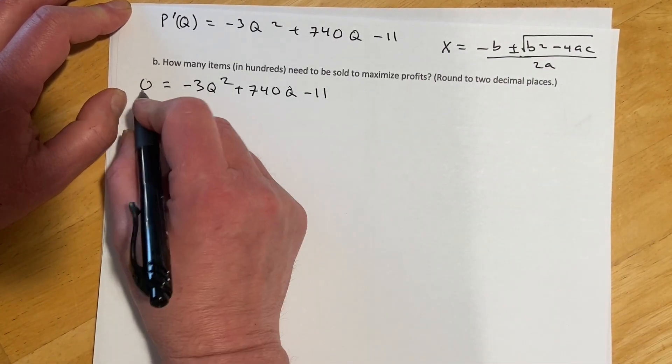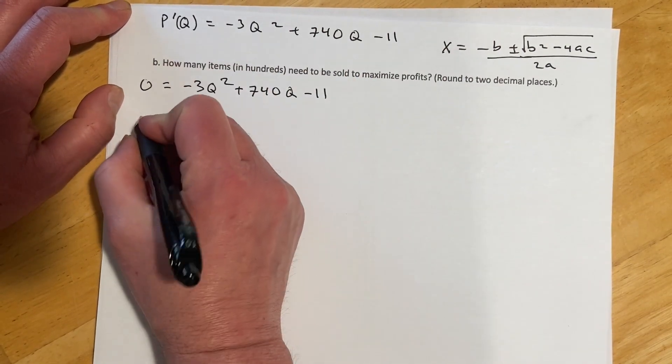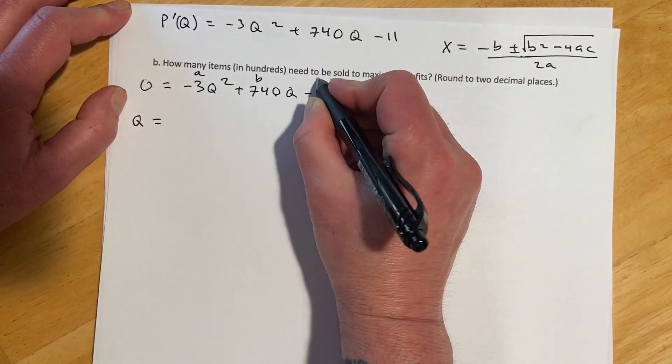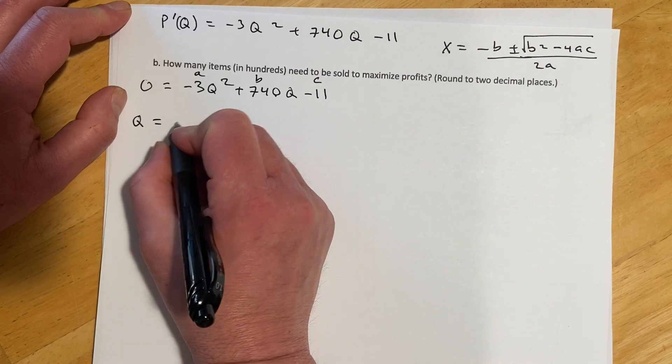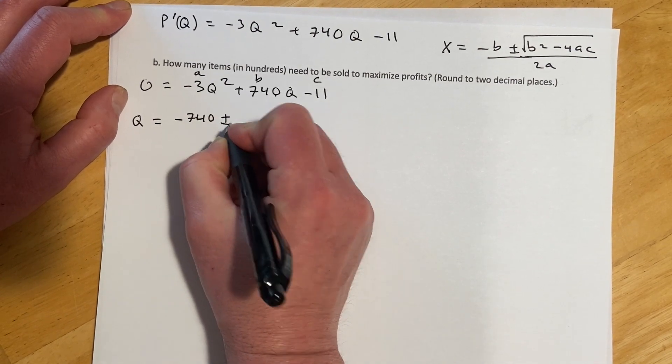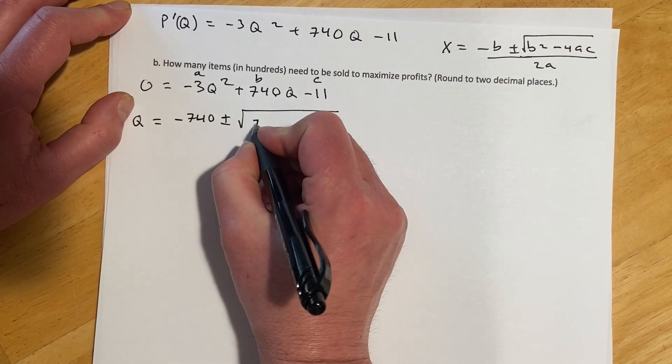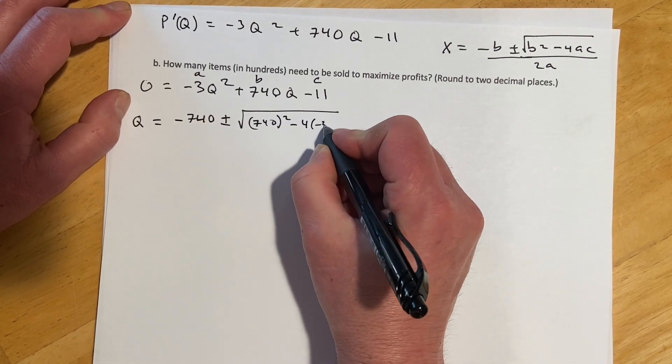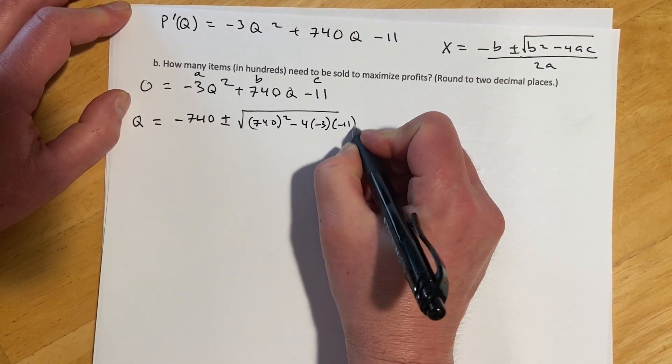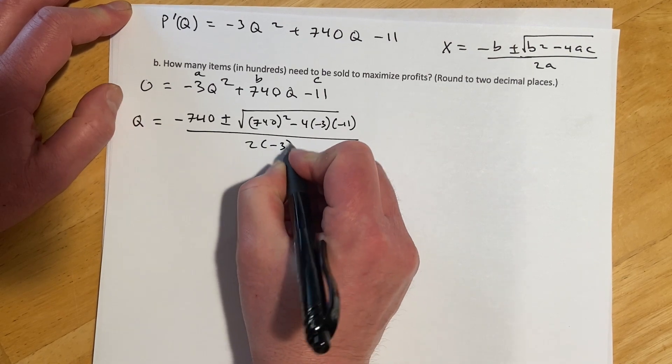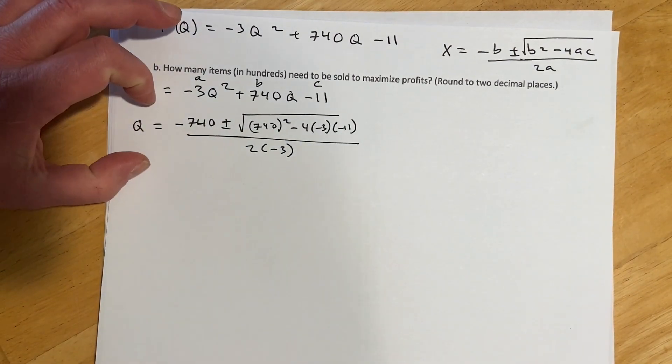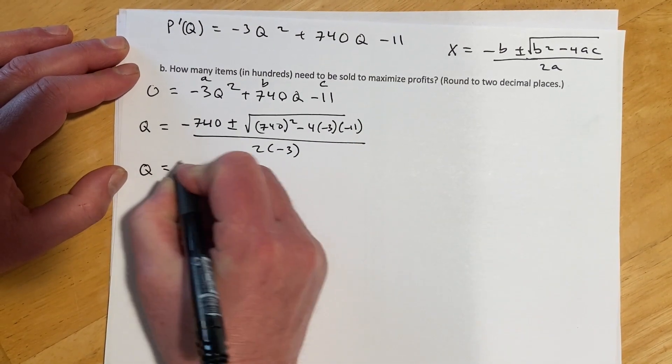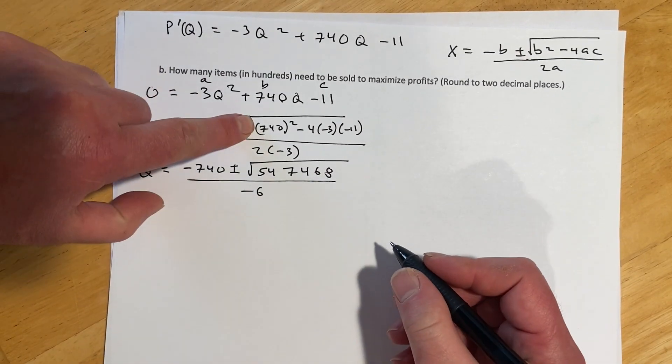So this will be, it's usually written with an X, but now we're going to be using Q because that's our variable. So Q equals, and this is our A and our B and our C right there. So Q equals negative 740 plus or minus 740 squared minus 4 times A is negative 3 times C is negative 11 and all over 2 times negative 3. And then once you get your quadratic formula set up, you're going to throw all that mess into a calculator, and here's what that part should come out to.